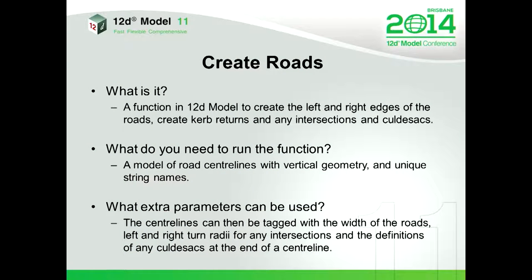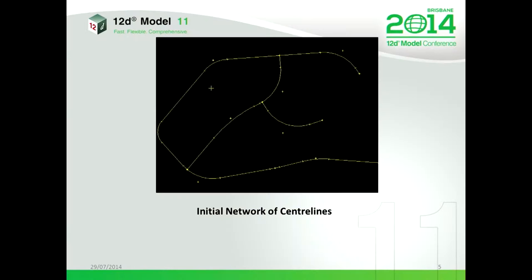Create Roads is basically a function in 12d Model to create the left and right hand edges of roads, curb returns, and any intersections and cul-de-sacs you might need. To run this function you simply need a model of center lines that are graded — so you need some type of vertical geometry — and the string names must be unique. Extra parameters include tagging center lines with road widths, altering left and right turn radii from a default value, and defining cul-de-sacs.